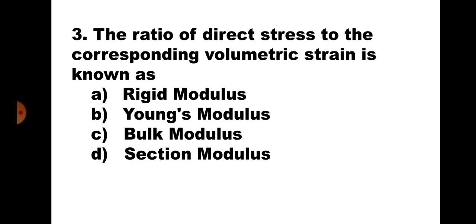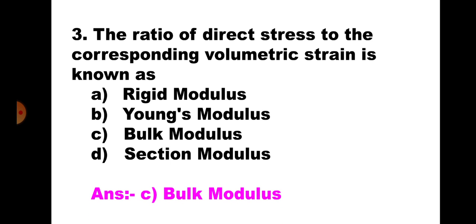Question number 3. The ratio of direct stress to the corresponding volumetric strain is known as: A. Rigid modulus, B. Young's modulus, C. Bulk modulus, D. Section modulus. This is the definition of bulk modulus — the ratio of direct stress to the corresponding volumetric strain. Hence, the correct answer is C. Bulk modulus.